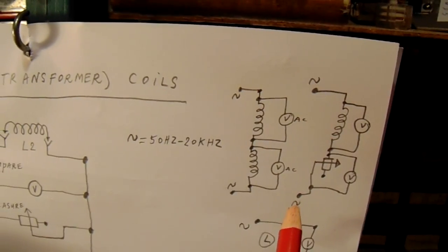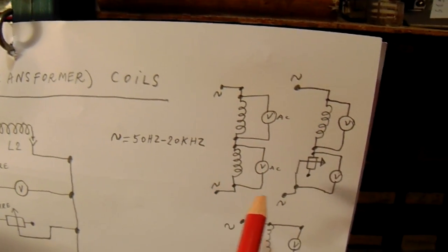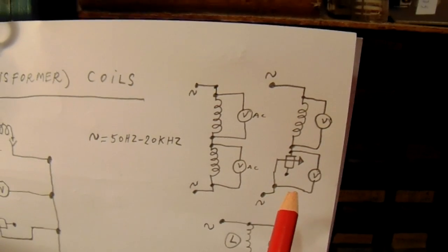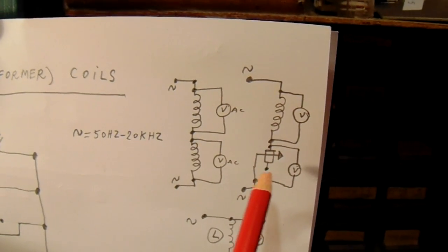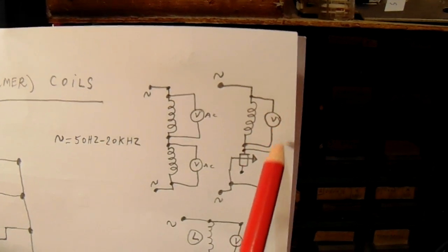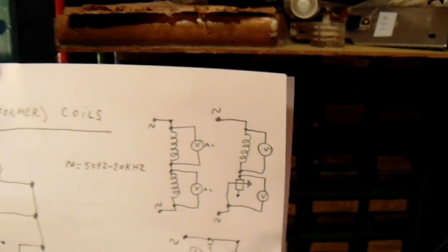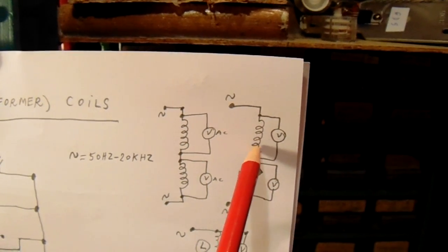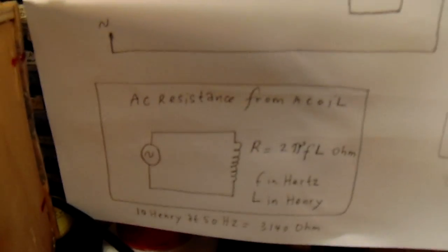When we take out the second coil and replace it by a resistor, we can change the value from that resistor till the voltage here and here is exactly the same. Then we know that the AC resistance from both devices is the same, so we can compare it and use this formula.